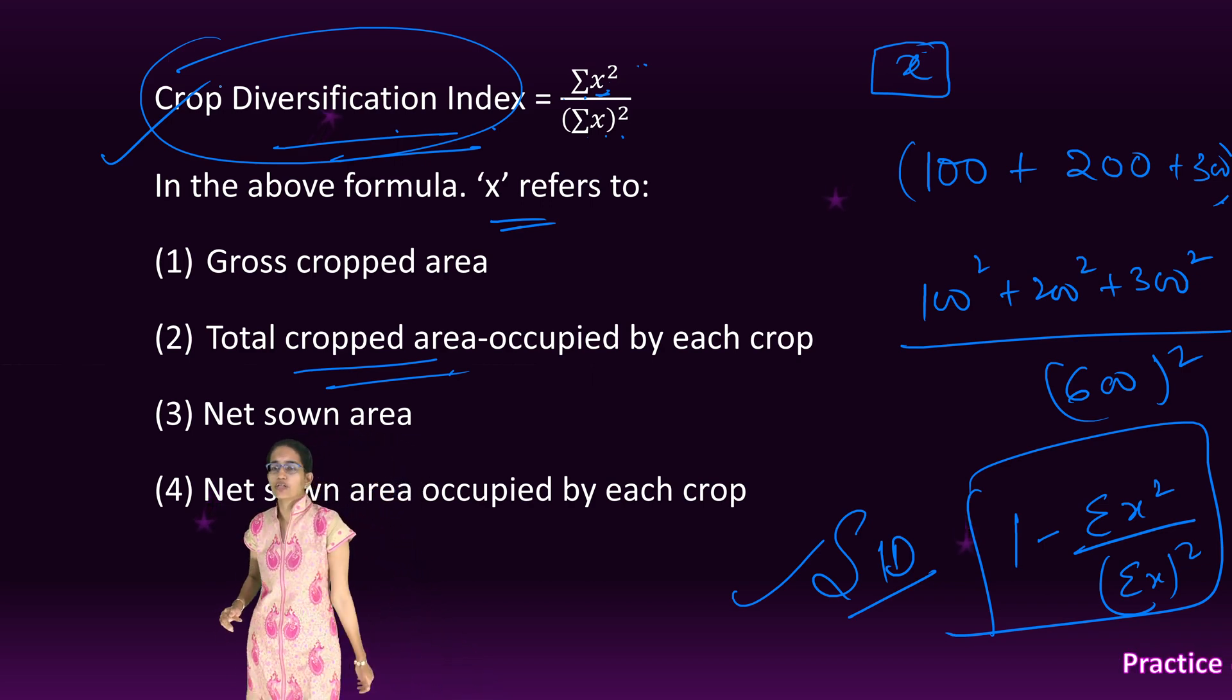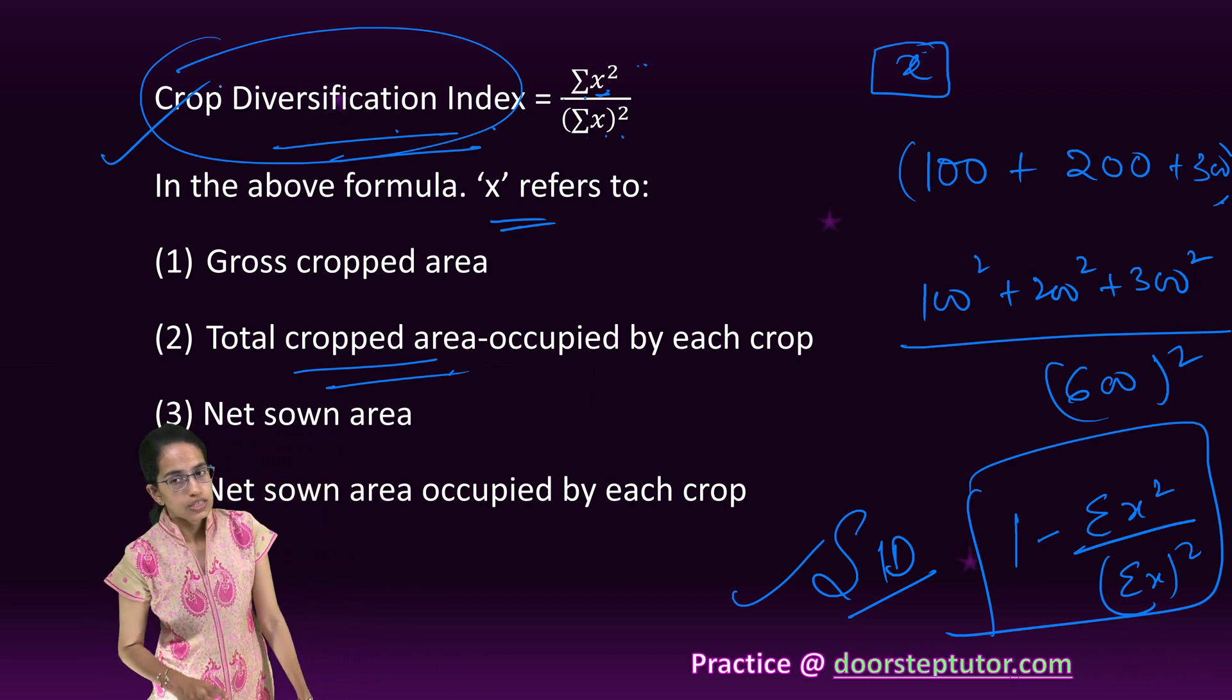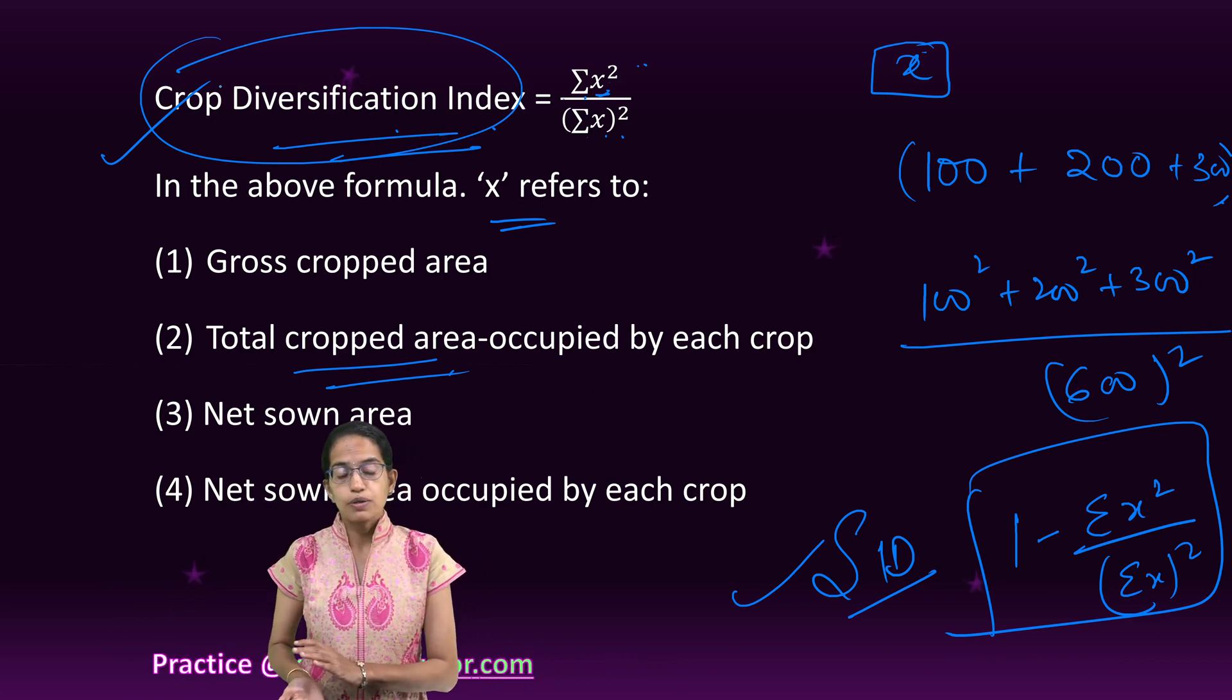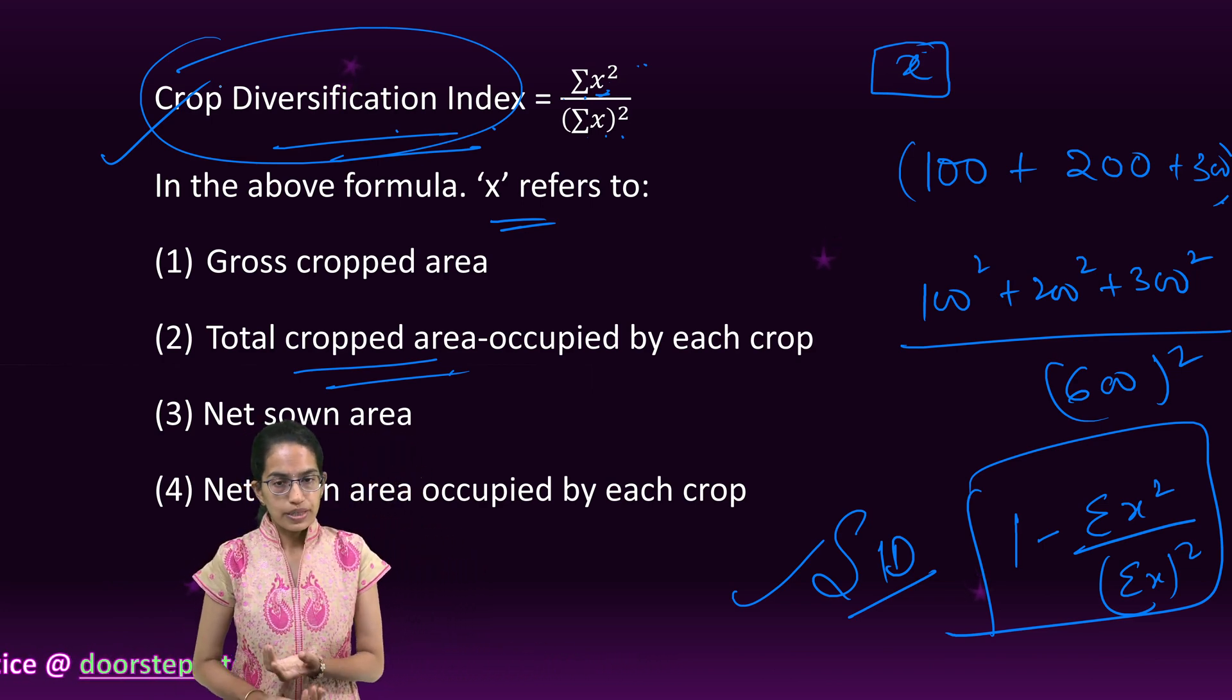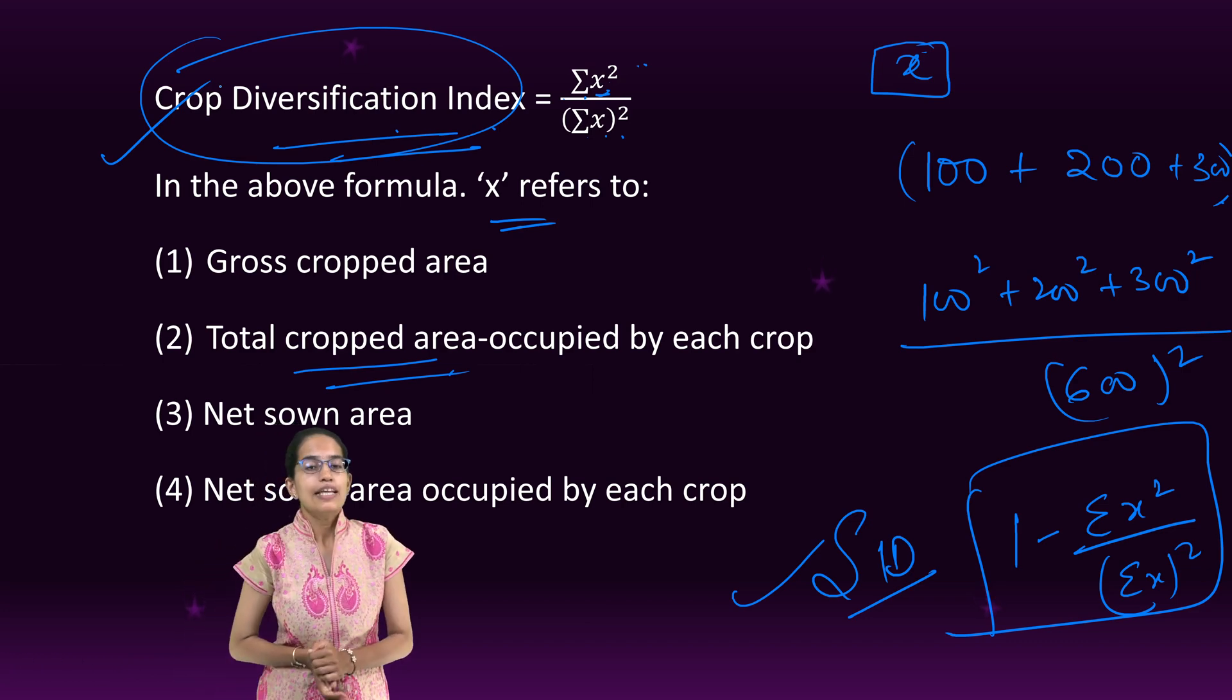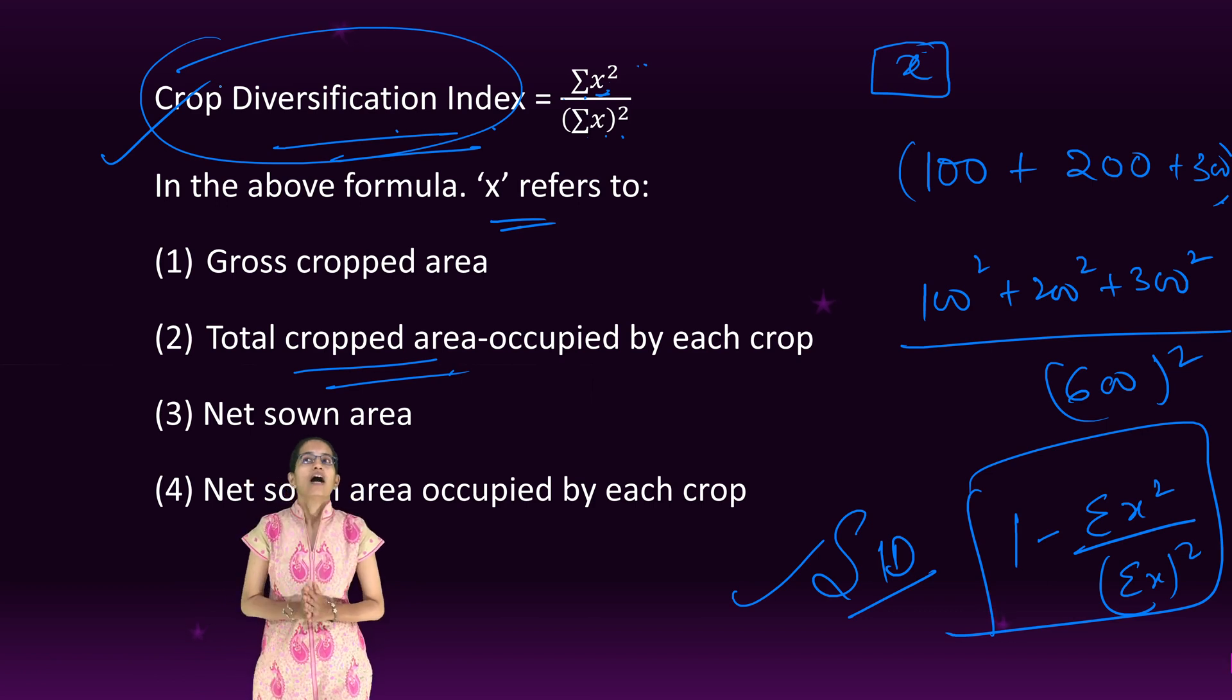This was again a question from agricultural geography. Crop combination and crop diversification are some of the important topics. Next time you can have Doi's Index as one of the important questions for crop combination, Weaver's model as another important one for crop combination, and then we also need to understand certain theories which were part of the question paper this time.